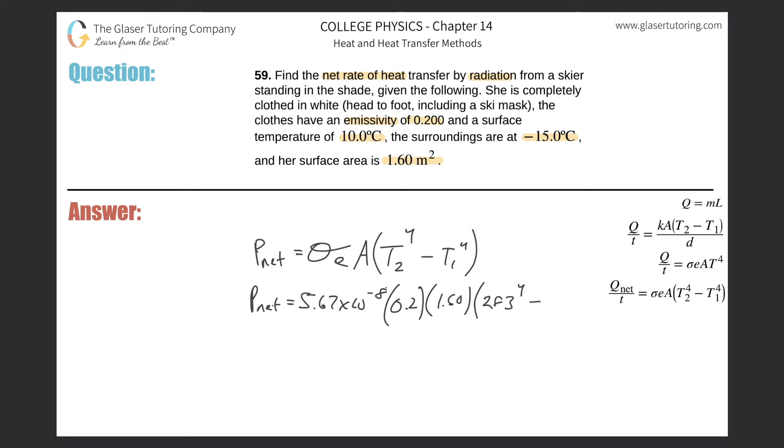Then minus - I've got to use the calculator for this. I just don't want to make a mistake in my head as I'm talking and can barely write the numbers down. This is going to be negative 15 degrees Celsius, which is 258 Kelvin, so that's raised to the fourth.